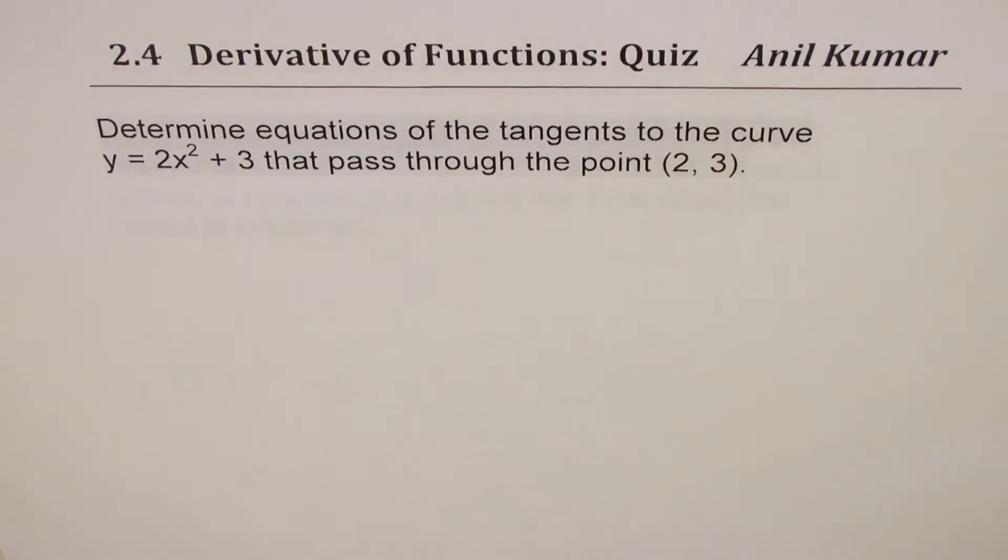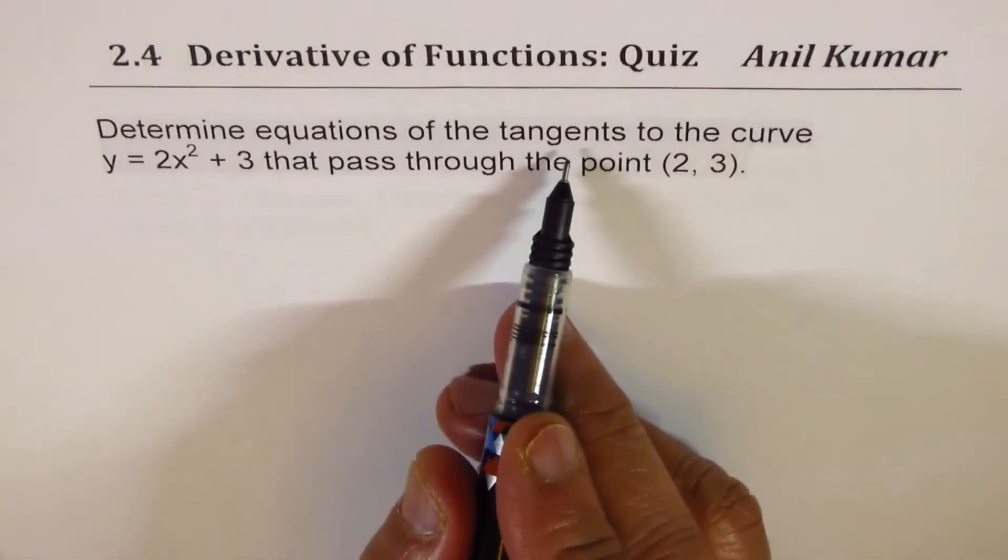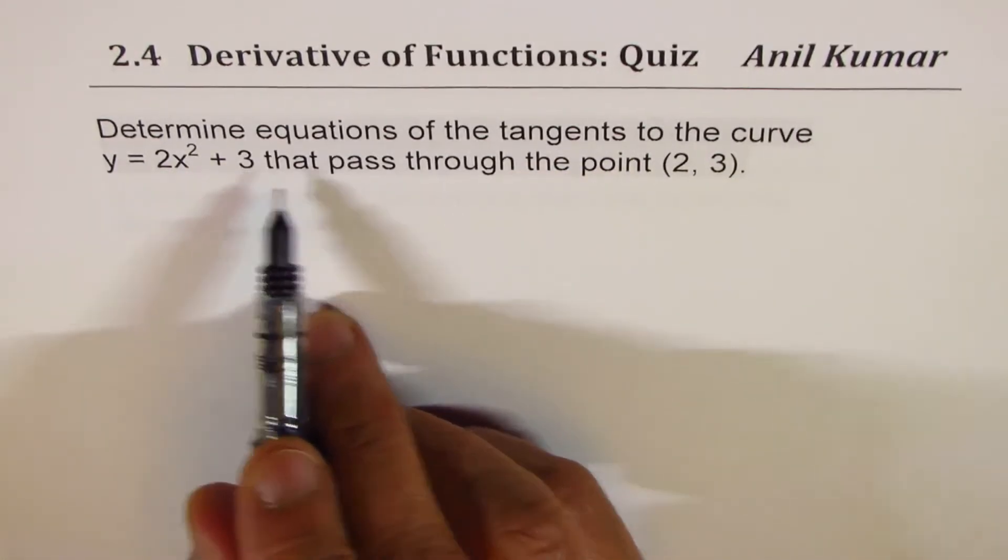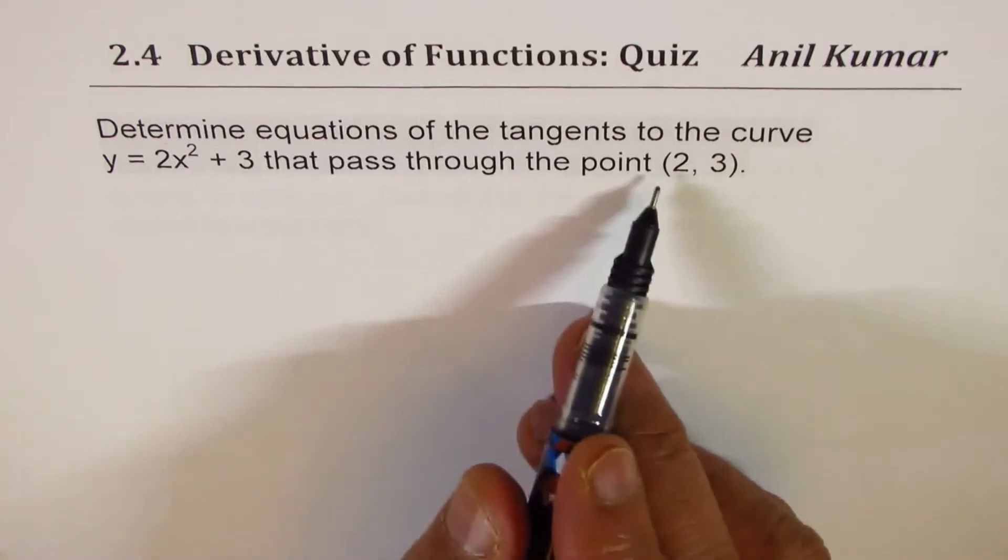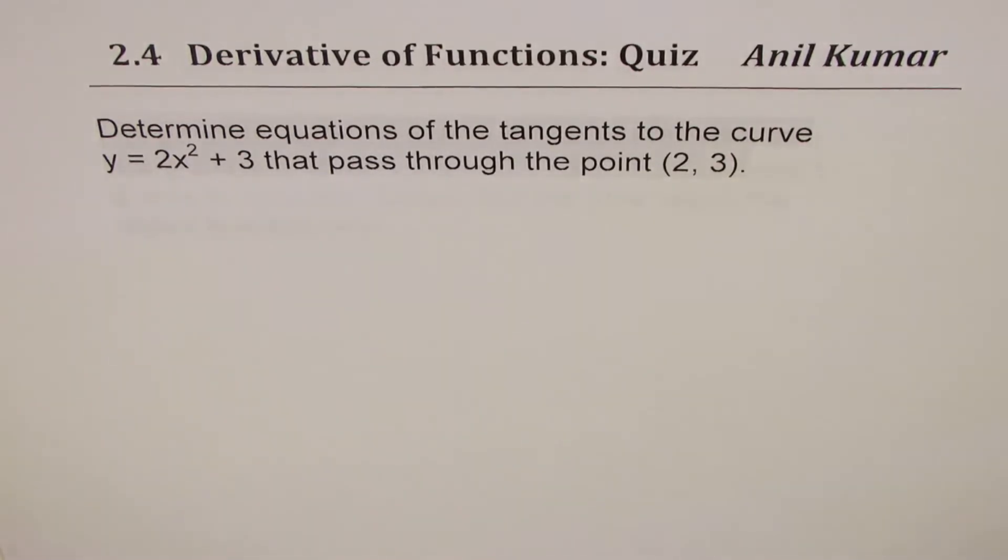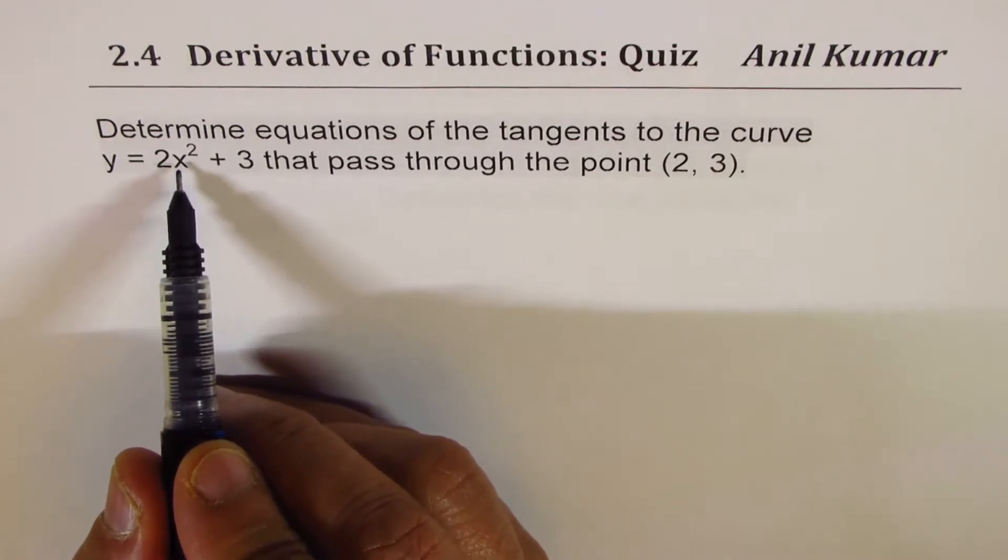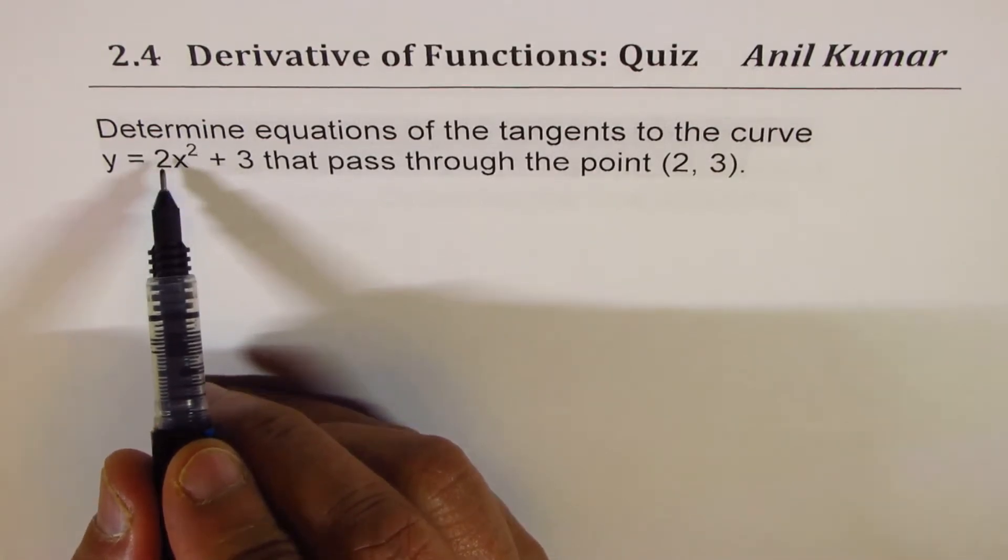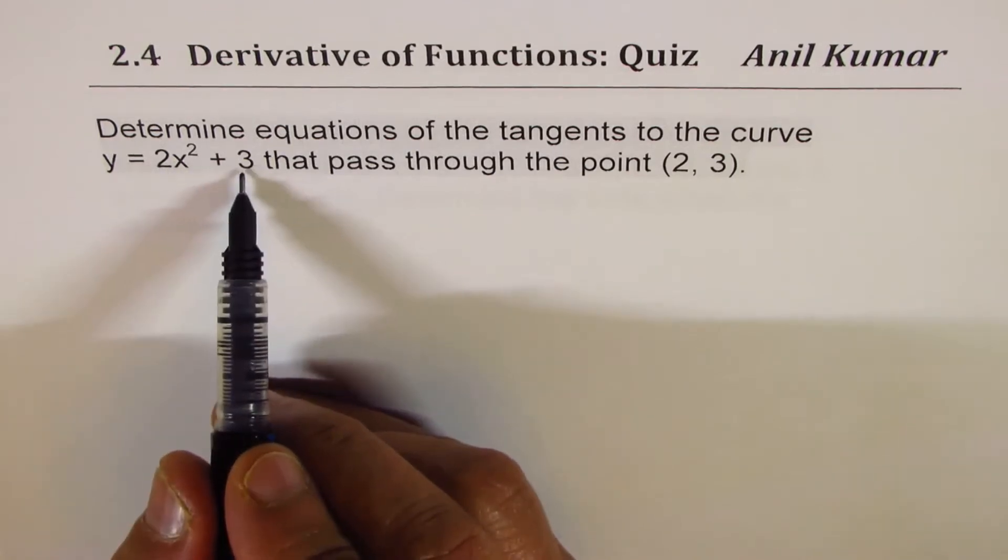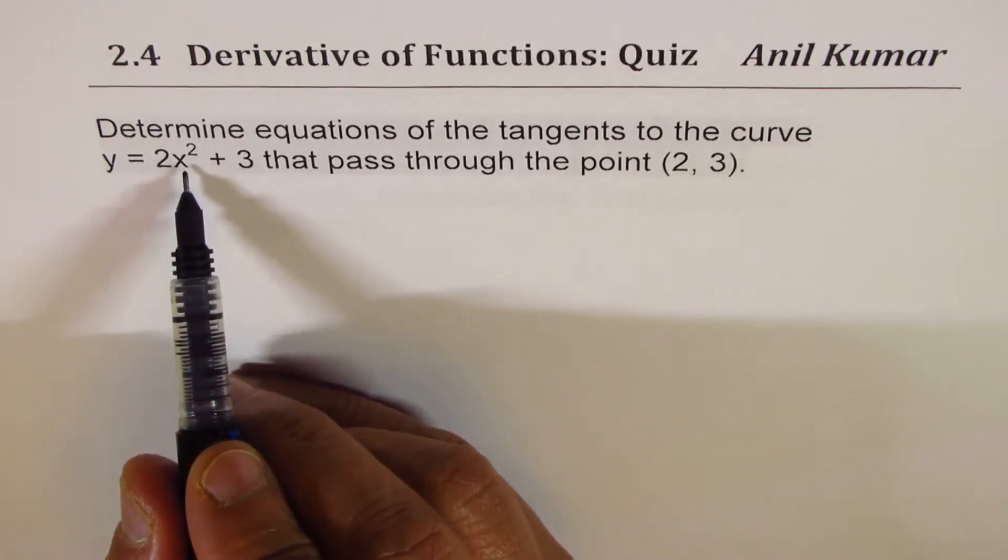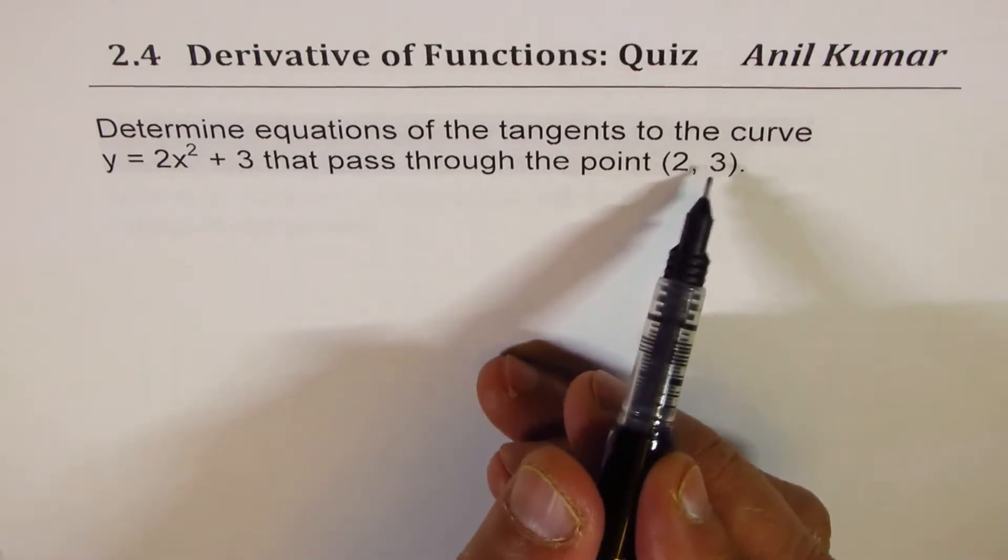Now we have to find equations of the tangents to the curve y equals 2x squared plus 3 that pass through the point (2, 3). If I substitute 2 here, what do I get? 2 squared is 4, 4 times 2 is 8, I get 8 plus 3, which is 11. I don't get 3. Whatever I substitute for x except 0, I don't get 3.